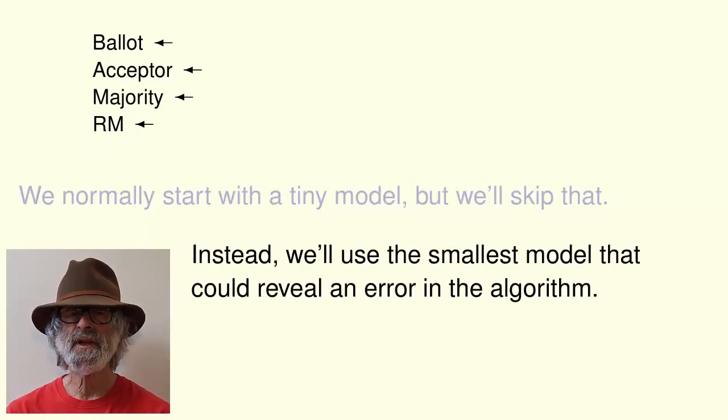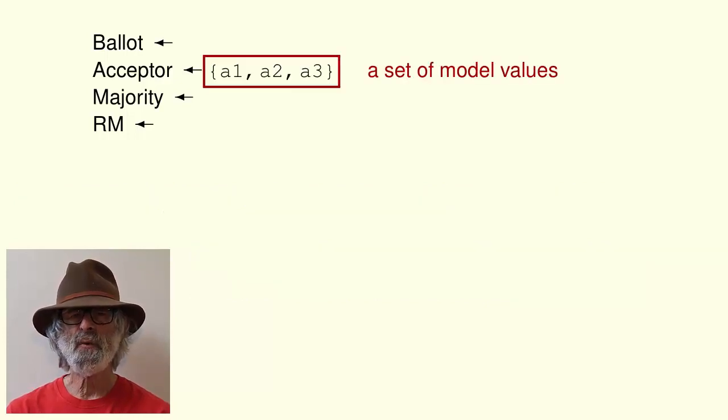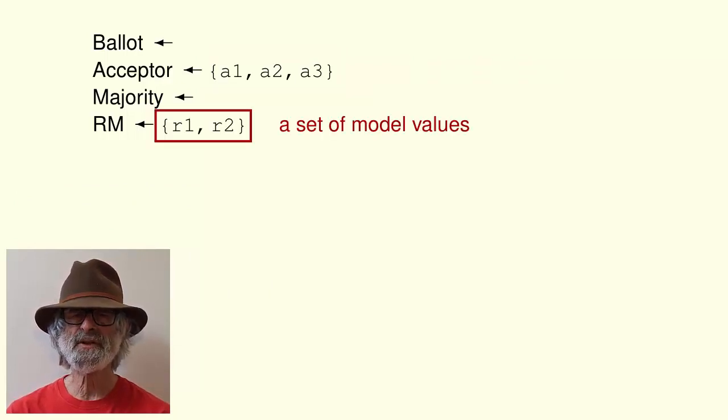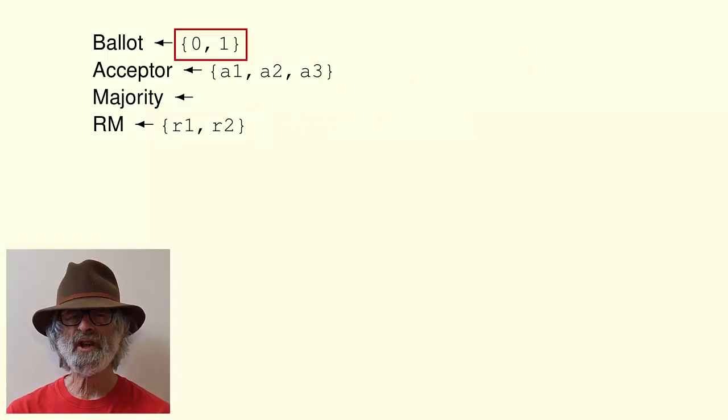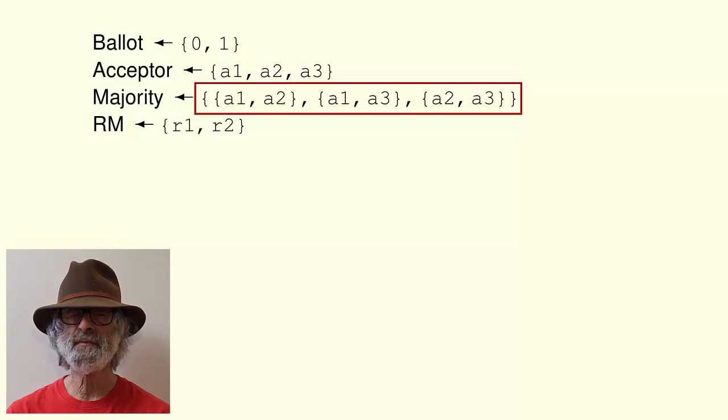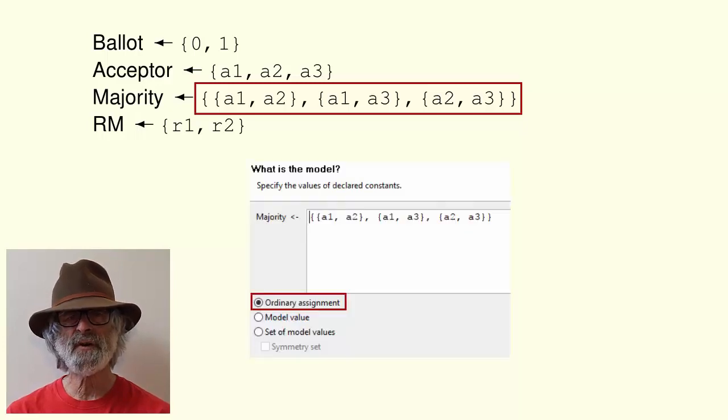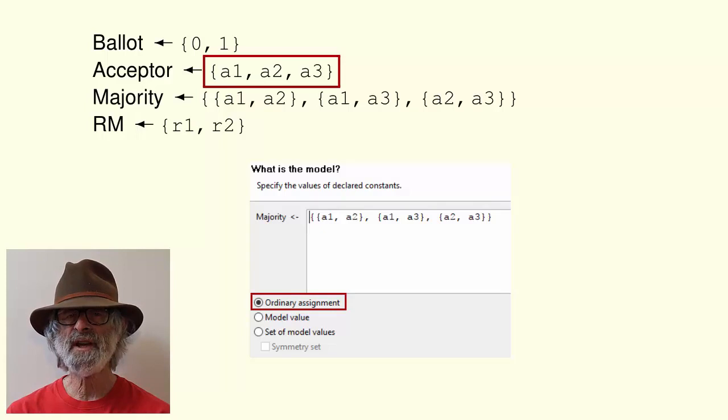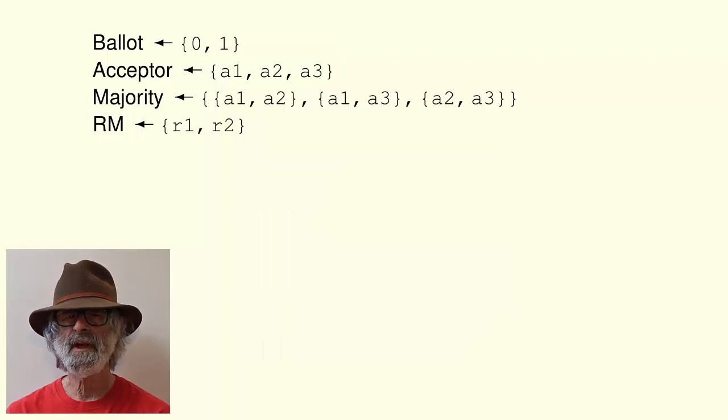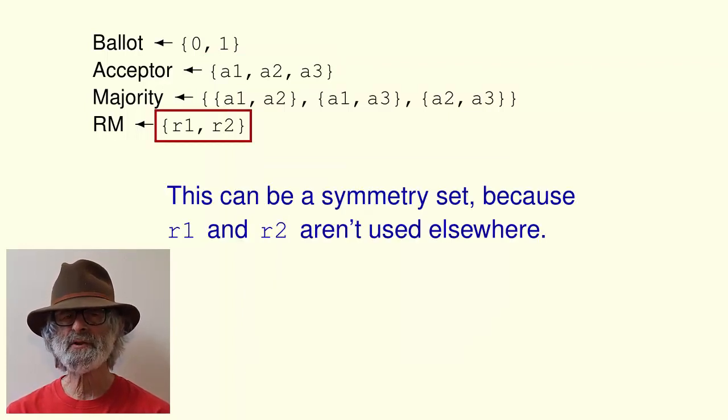We assign a set of three model values to acceptor and a set of two model values to RM. We assign this set of two numbers to ballot and this set of sets of acceptors to majority. This is an ordinary assignment because the model values A1, A2, and A3 are declared in the assignment of a set of model values to acceptor.